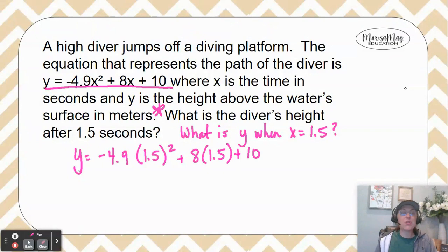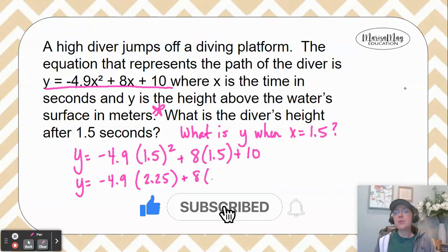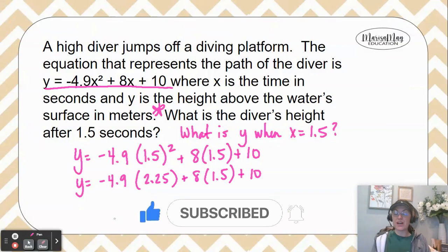Now be really careful with the order of operations here. You do need to multiply the 1.5 to the second to get 2.25 first. Then you can go to your next step, which would be to multiply the negative 4.9 times the 2.25.